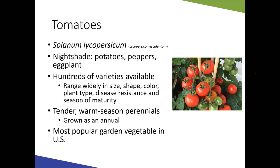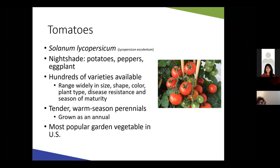Plant types vary, and there's a variety of different disease resistance options. If you have issues with particular diseases year in and year out, look for resistant varieties. Maturity also varies — some dwarf varieties mature in 40 to 50 days, while others can take 60 to 70-plus days before you start getting mature fruit.